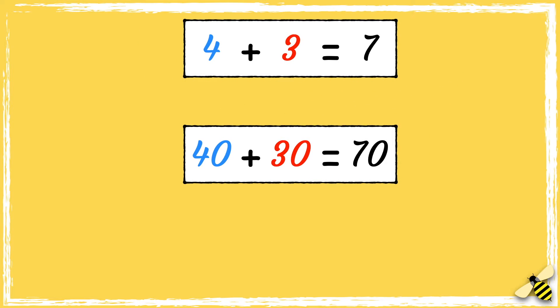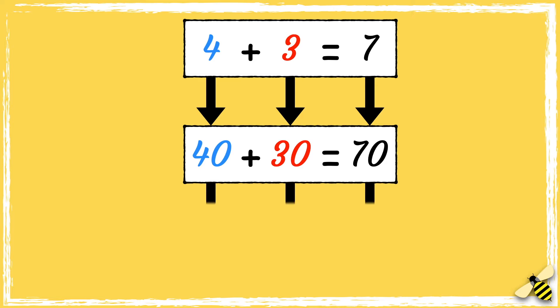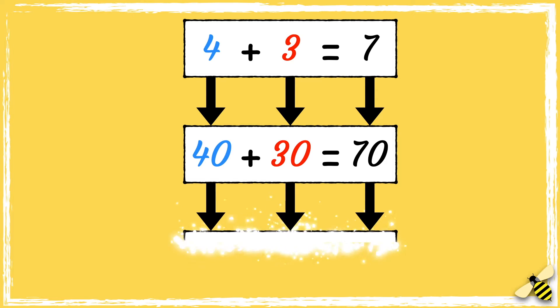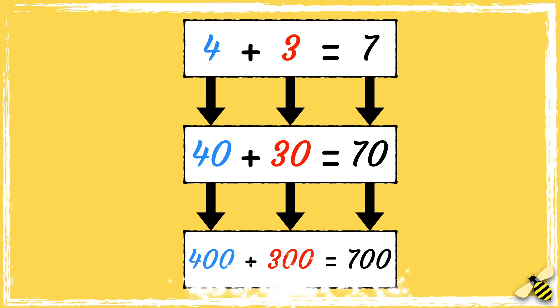We call this related facts. If I know that 4 add 3 equals 7, then I know that 40 add 30 equals 70. And I also know that 400 add 300 equals 700.